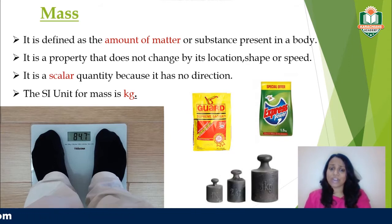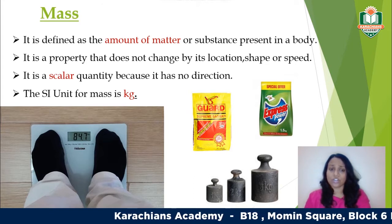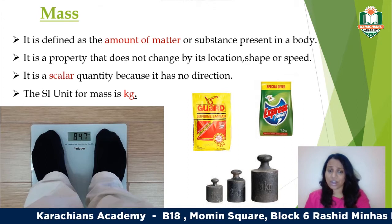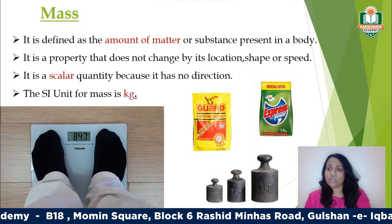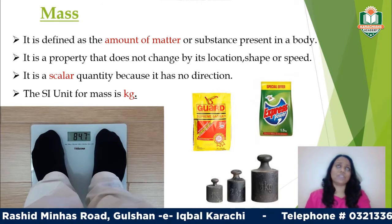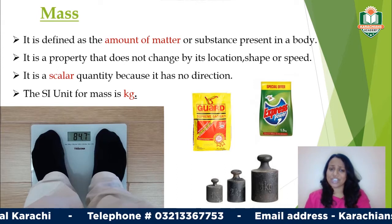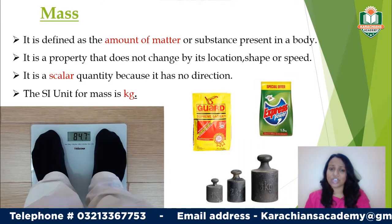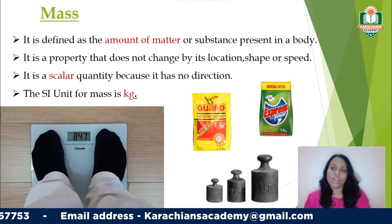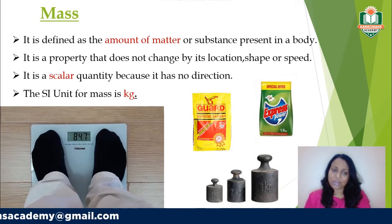Looking at these metal pieces of 1, 2, and 3 kg — the shape is different. Comparing with the packet of surf, the shape and size are different but the mass is the same. Mass is a scalar quantity because it does not have direction. I would say the mass of an object is 4 kg — '4' is the magnitude and 'kg' is the unit; it does not give any direction. So it is a scalar quantity.